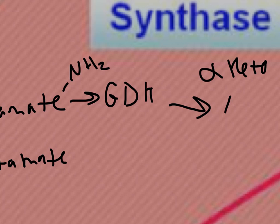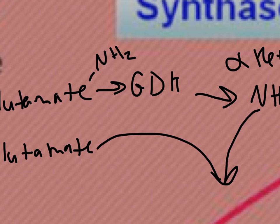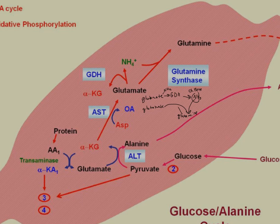This NH3 or NH4, depending on the pH, is released. Then the second glutamate, through glutamine synthase, accepts the nitrogen group from the first glutamate, and we get glutamine. So a glutamate gives up a nitrogen and another glutamate accepts that nitrogen to form glutamine. What's important to understand is that it's not the same glutamate doing both — it's two different glutamates.